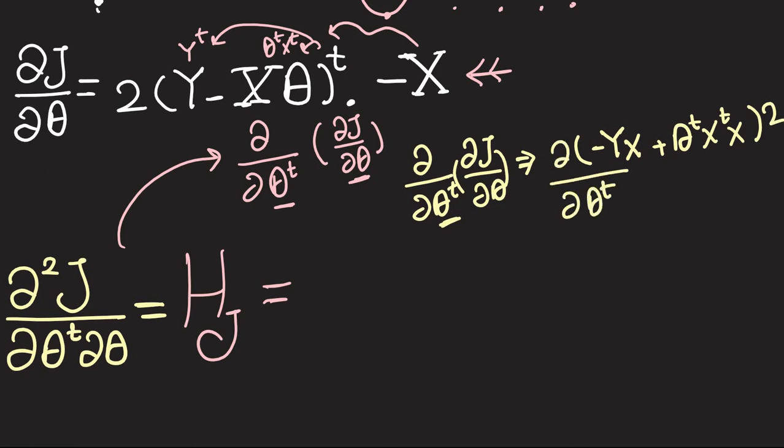So this is going to give us 0, a zero matrix, because none of these is a function in theta. And this is a constant, so we can take that out and then have ∂θ^T/∂θ^T which is just an identity matrix. So this whole thing ends up with 2 multiplied by X^T X.